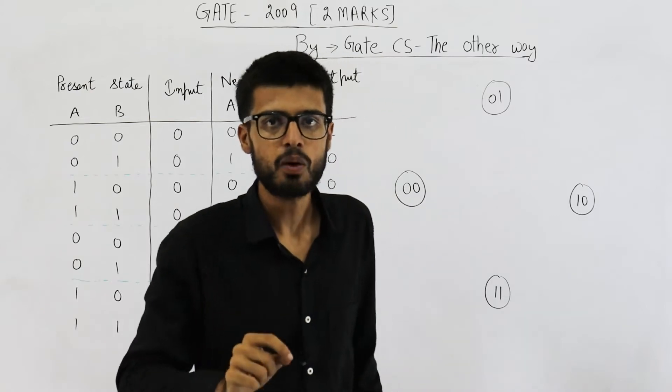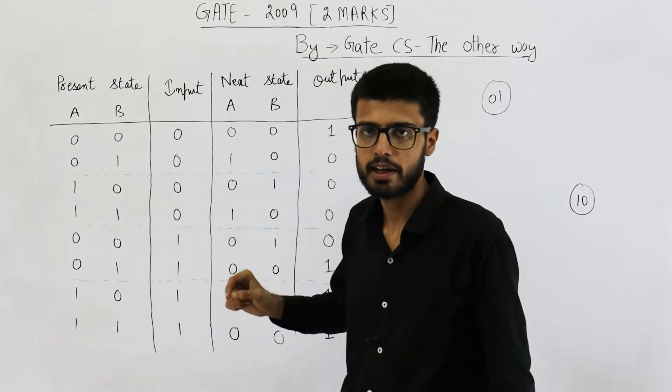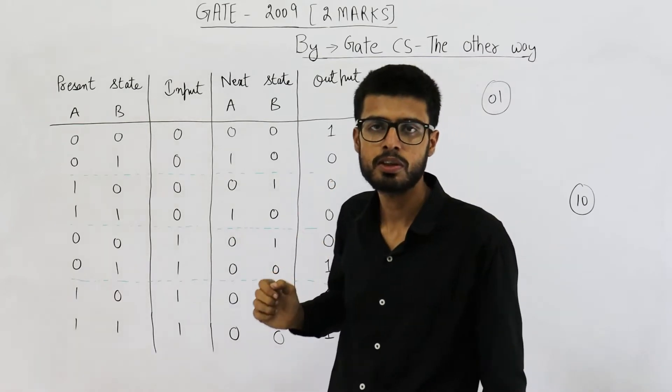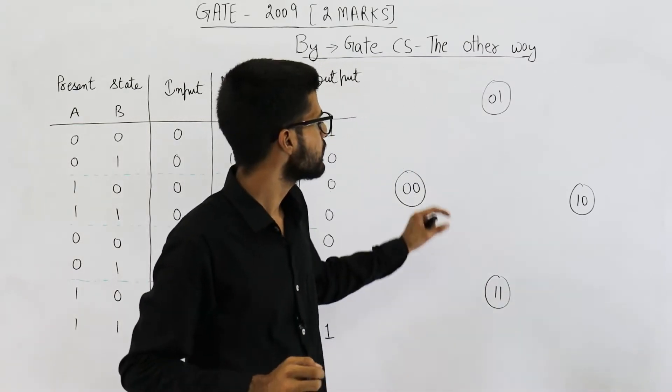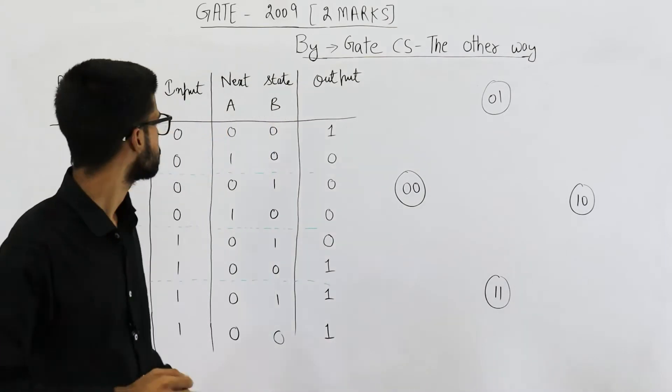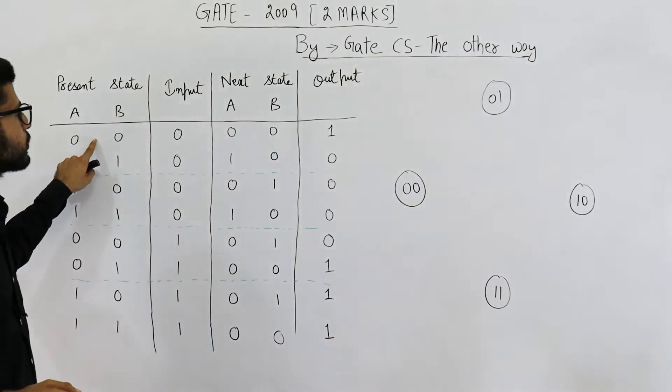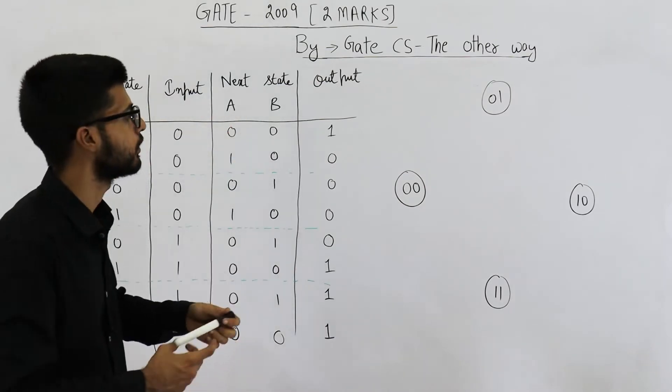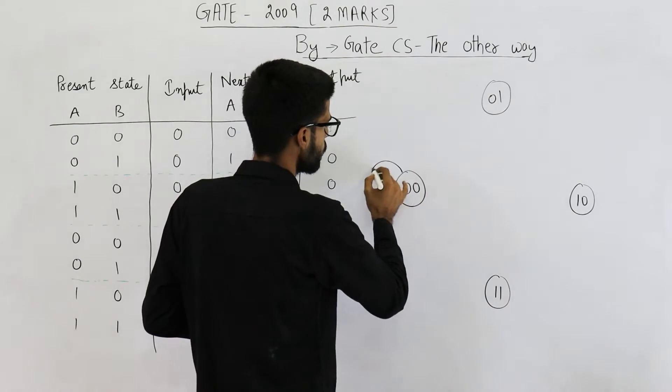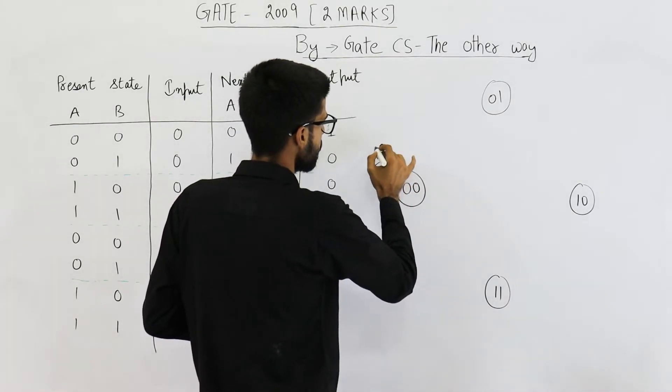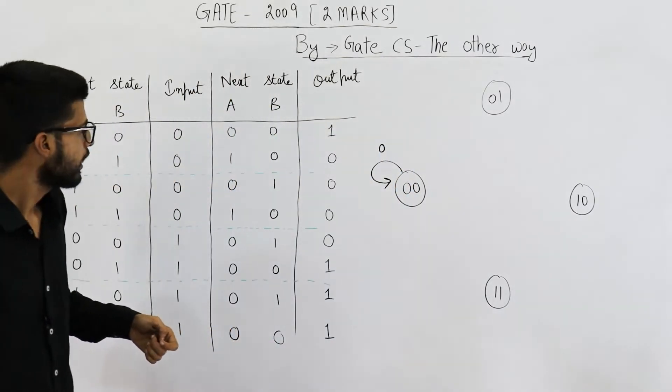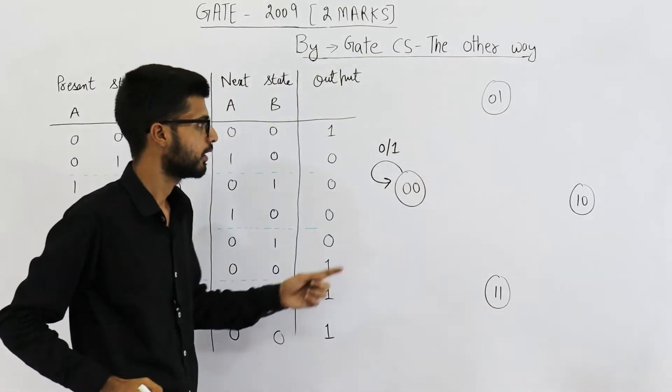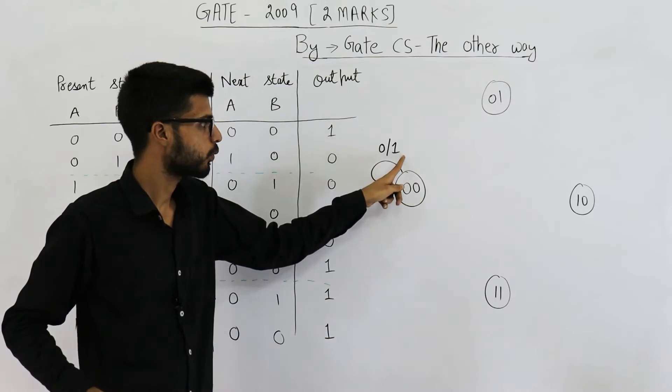So it's a Mealy machine. Now let's draw the state transition diagram. We are given state transition table, but let's convert it into state transition diagram because it's easy to analyze a diagram. So state 0,0 upon seeing input=0 will go to state 0,0 only. So this one will be a self loop like this and the output will be 1. So I'm writing slash 1. 0 is the input, 1 is the output.